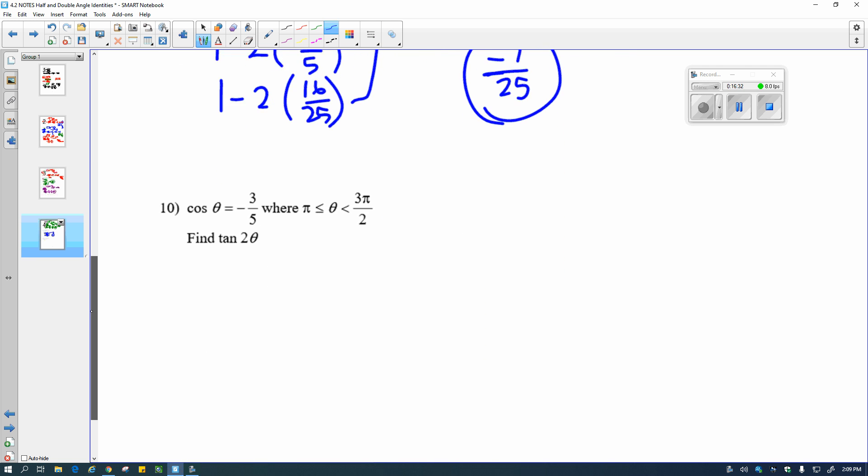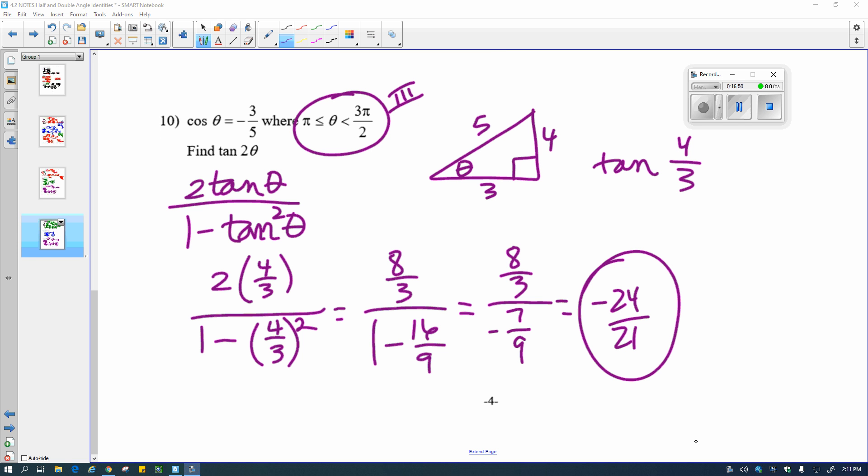So here's our final one, tangent double angle again. At this point, if you want to pause the video, pick the function or the identity that you're going to use, pause the video, work through, see how you do, and then we can meet back up when you are finished. You probably recognize that that one looked very similar to the previous tangent double angle that we did. Again, you're going to see some things kind of show up again.